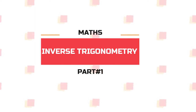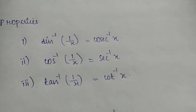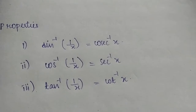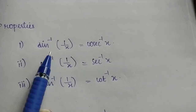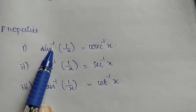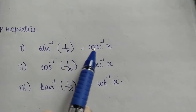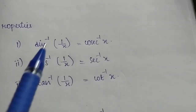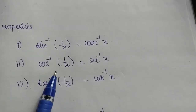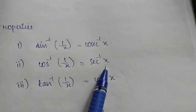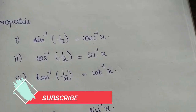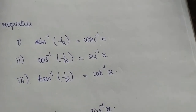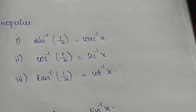We have to use Inverse Trigonometry properties. In the first set of properties: sin inverse of 1/x is cosec inverse x, cos inverse of 1/x is sec inverse x, and tan inverse of 1/x is cot inverse x. This is the first set of properties.